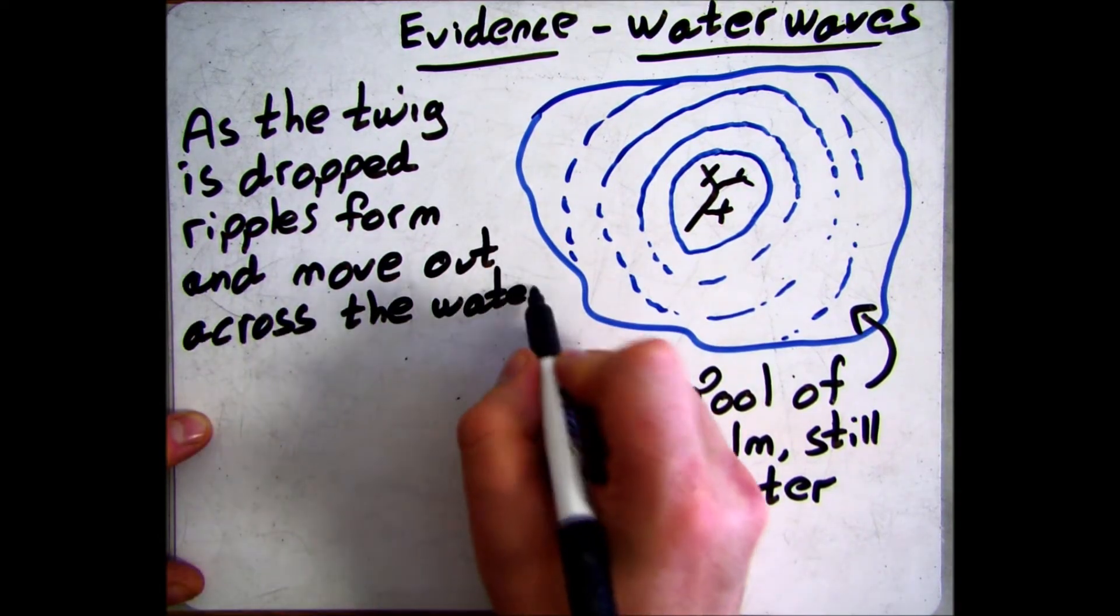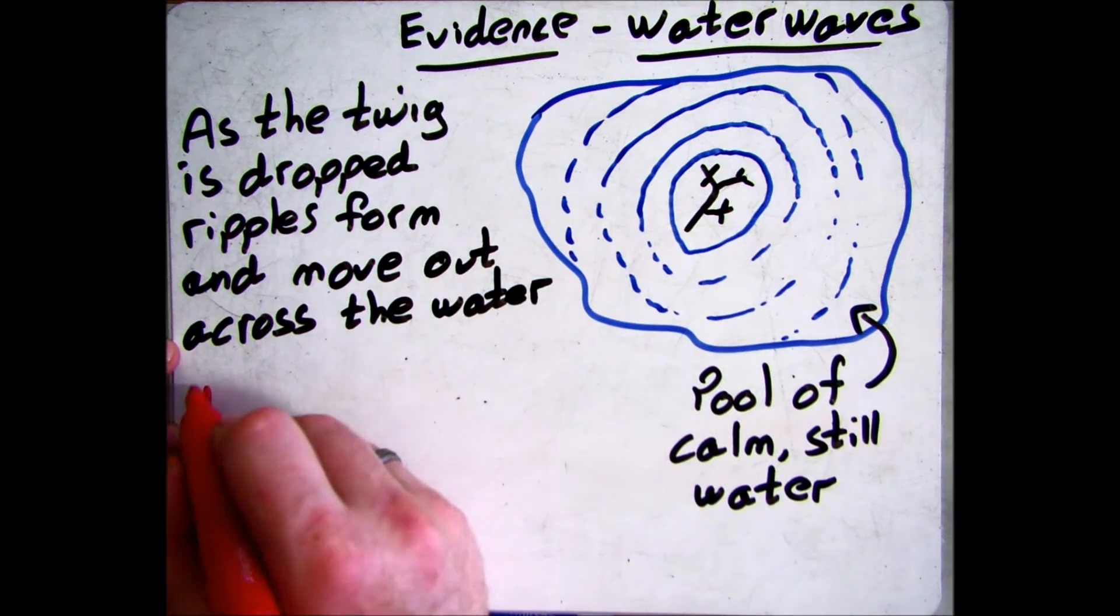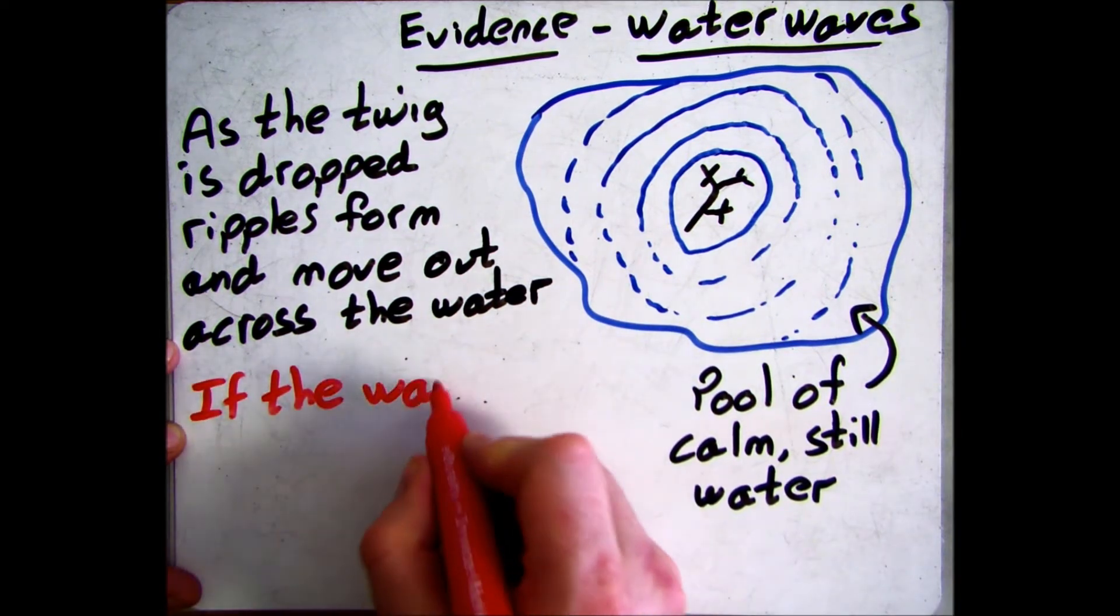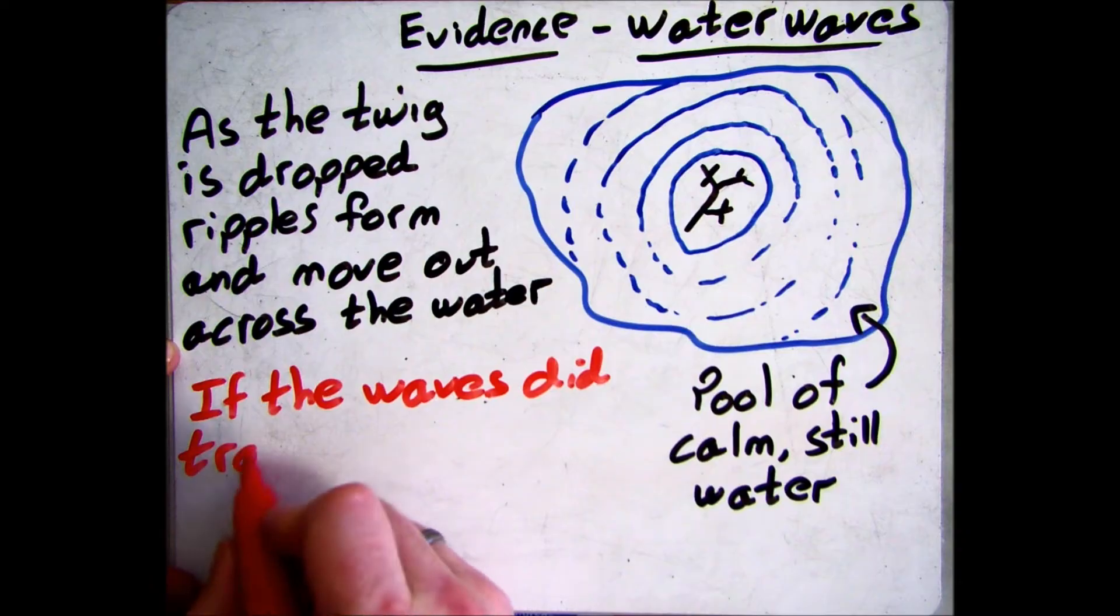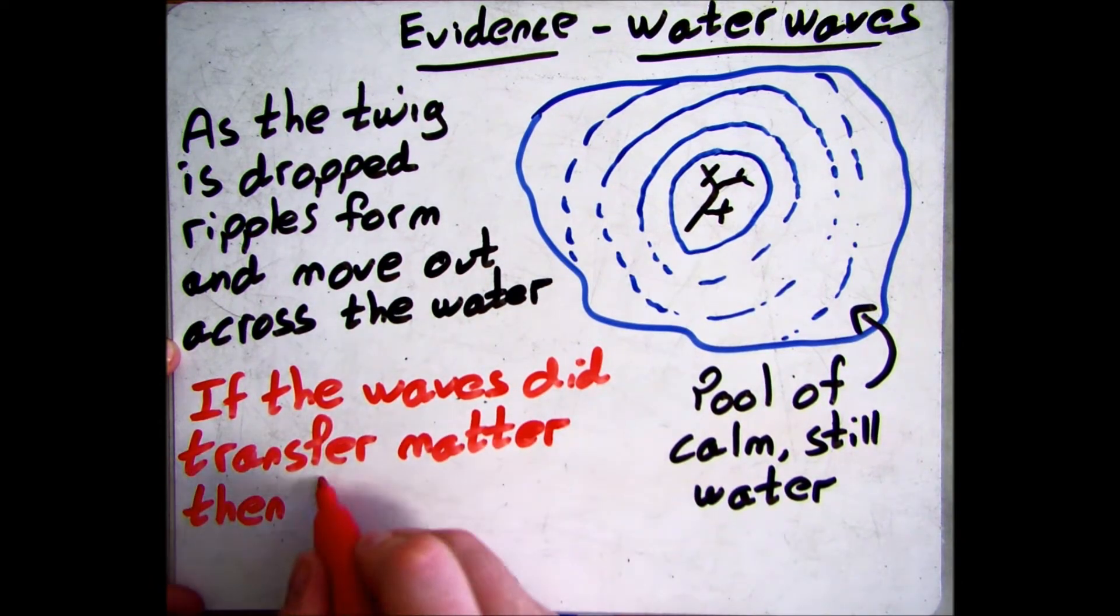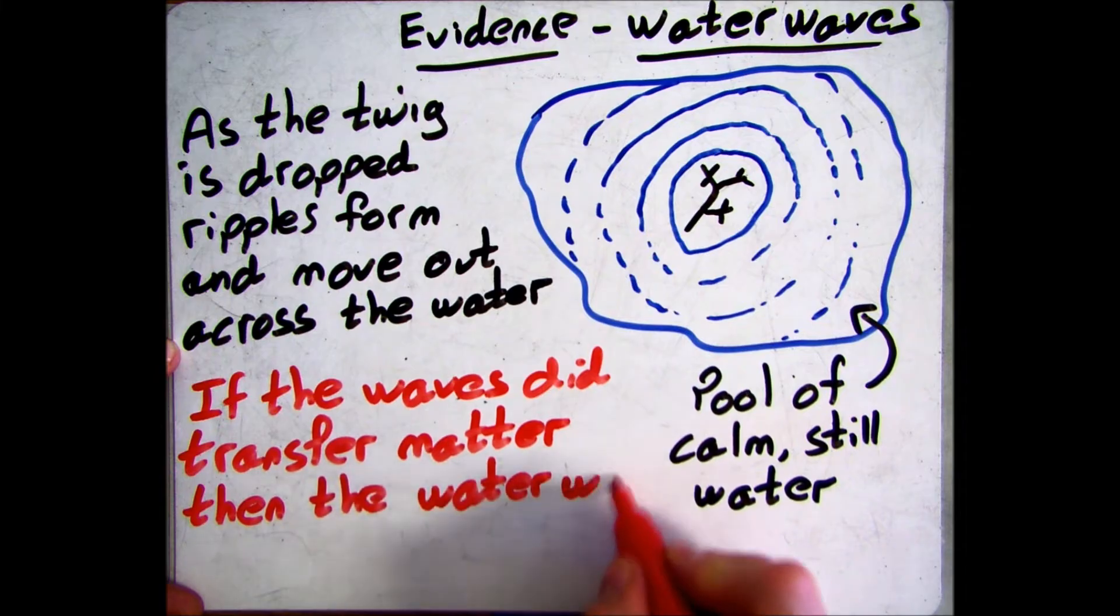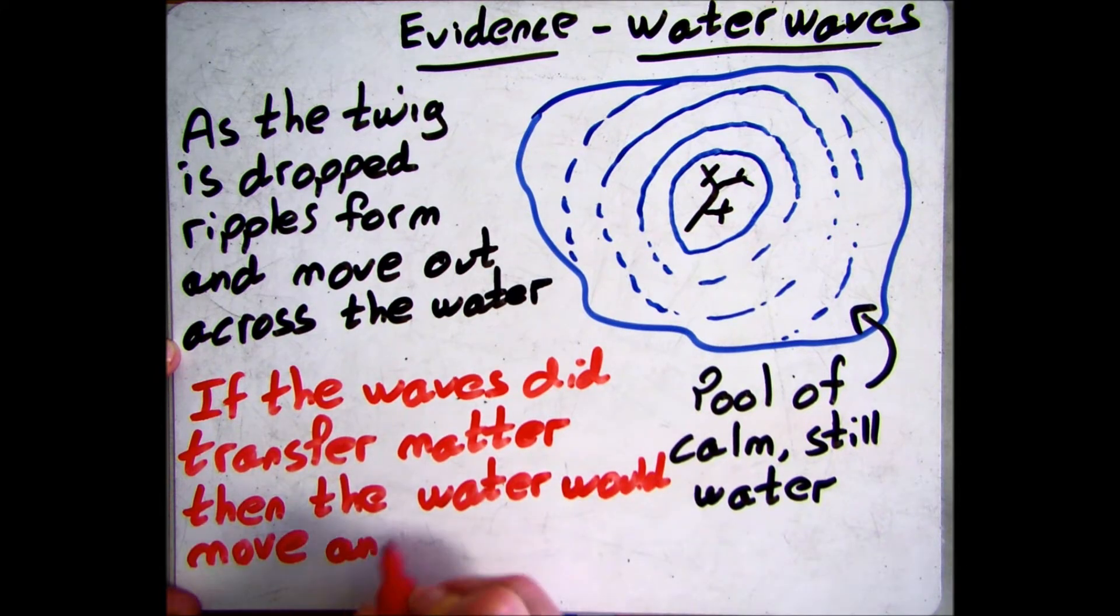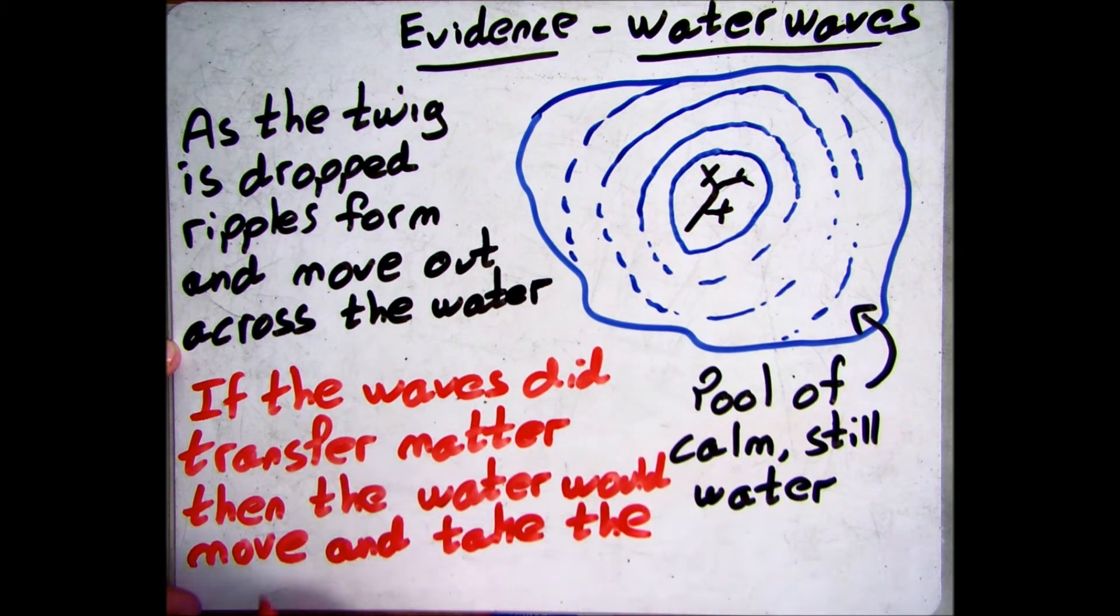This is evidence that waves do not transfer matter. Because if they did, if the water particles moved away from the source, we'd see the twig moving with the water particles. But we don't see the twig moving, and this is because the waves do not transfer matter - they only transfer energy and information.